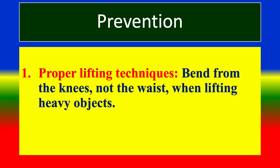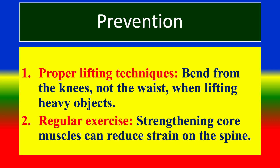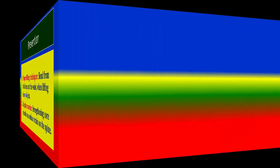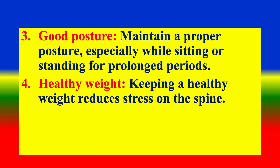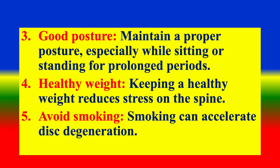Prevention strategies include: Using proper lifting techniques — bend from the knees, not the waist, when lifting heavy objects. Regular exercise — strengthening core muscles can reduce strain on the spine. Good posture — maintain proper posture, especially while sitting or standing for prolonged periods. Healthy weight — keeping a healthy weight reduces stress on the spine. Avoid smoking — smoking can accelerate disc degeneration.